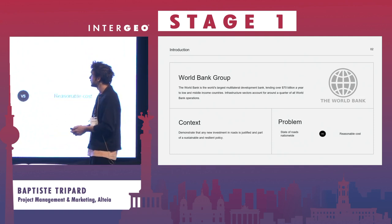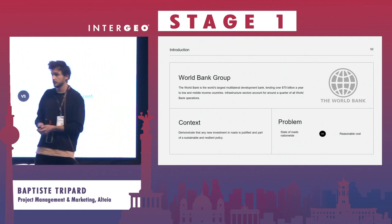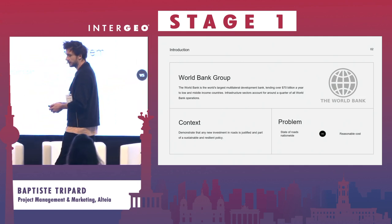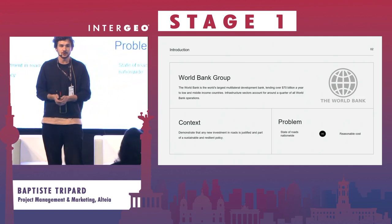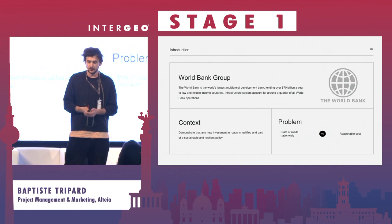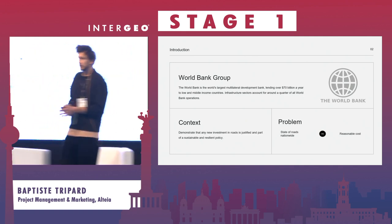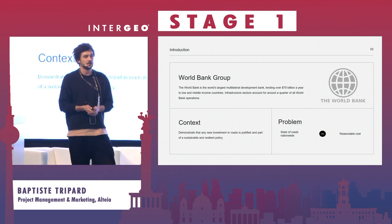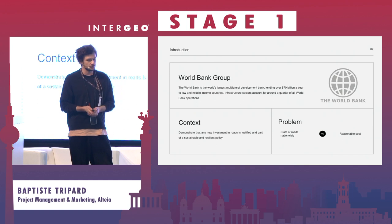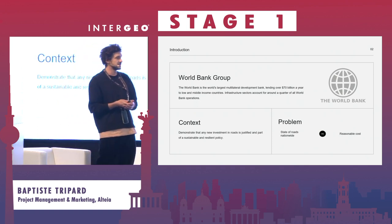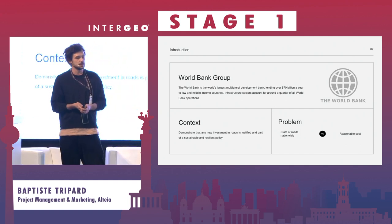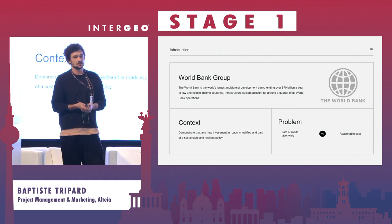First, an introduction for people who do not necessarily know who the World Bank is. It's actually the largest lender in the world. They loan about 70 billion dollars a year for any kind of education, health, food, or infrastructure programs. Infrastructure actually represents 25% of the money that the World Bank is investing every year, and the World Bank mainly invests in developing countries.